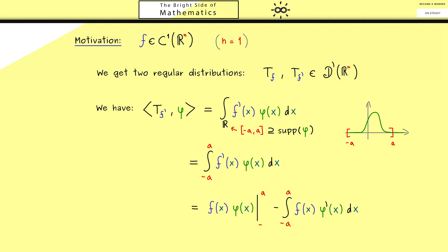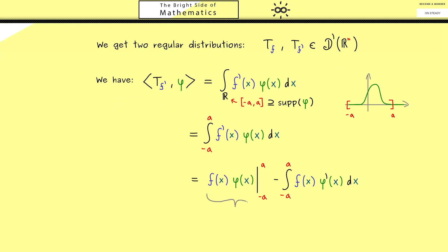This boundary term is not important at all, because phi(-a) and phi(a) are exactly zero. So this whole boundary term simply vanishes due to the property of the test function phi. Only the second part remains, and we recognize it as a distribution applied to a test function: it's the distribution -T_f applied to phi', since phi' is also a well-defined test function. With this formula we see that the derivative of the function f is pushed to the test function phi, along with a minus sign — this is how a derivative works for a C^1 function.